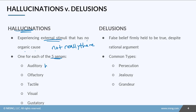Auditory means they're hearing something that isn't really there. Olfactory is smelling something. Tactile is they're feeling something that isn't there. Visual, they're seeing something. And gustatory, they're actually tasting something.